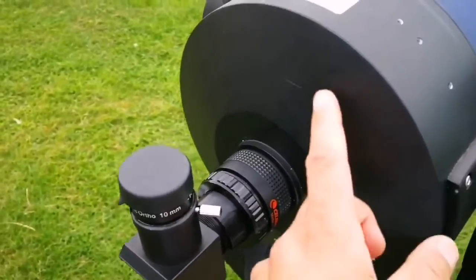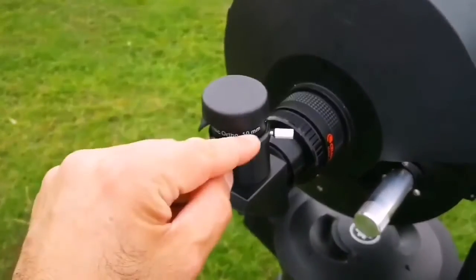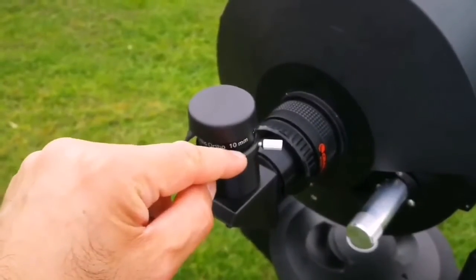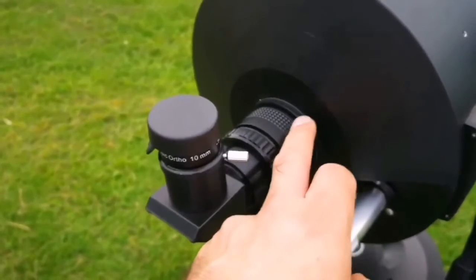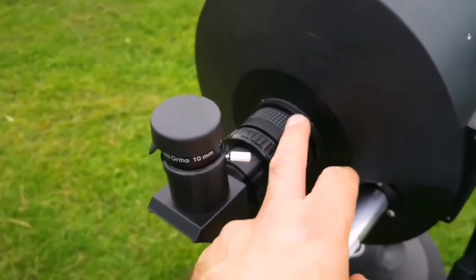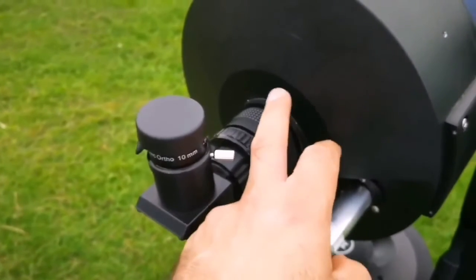We have almost 2 degrees here. This is a 10mm eyepiece. I had 40mm last night on this. With this focal reducer, the widest possible field of view was around 2 degrees, which is really good.